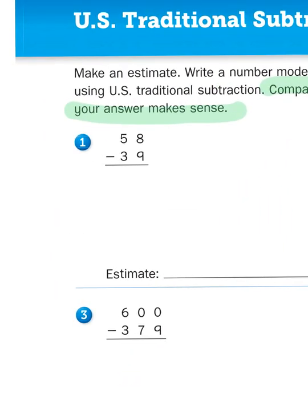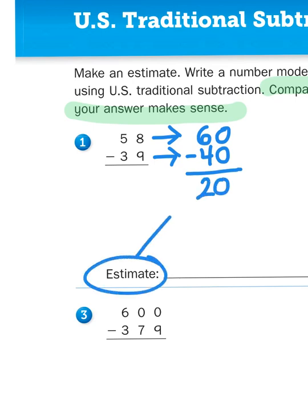But let's estimate first. I'm going to round each of these numbers, 58 and 39, to the nearest 10. So 58 rounded to the nearest 10 is going to be 60. So I'll put that right there. 39 rounded to the nearest 10 would be 40. Both of these numbers round up to the next group of 10s. So then when I subtract, 60 minus 40, I'm left with an answer of 20. So that's my first job right there. I estimated about how big my answer should be.